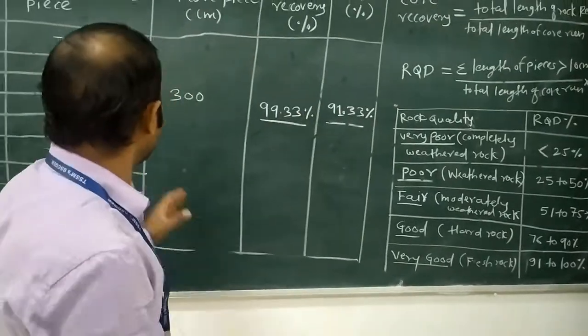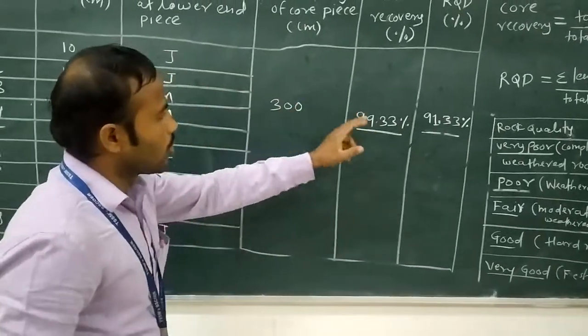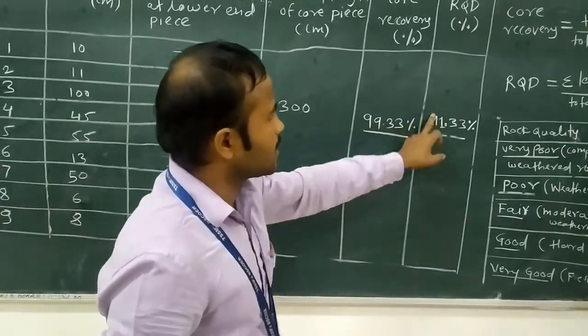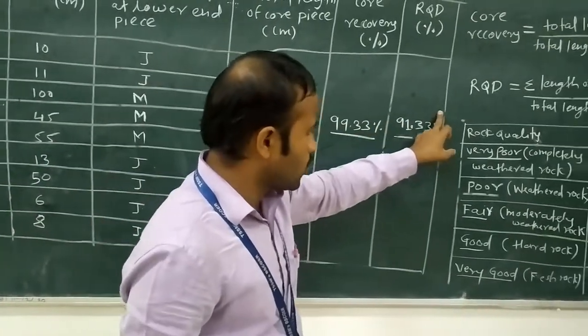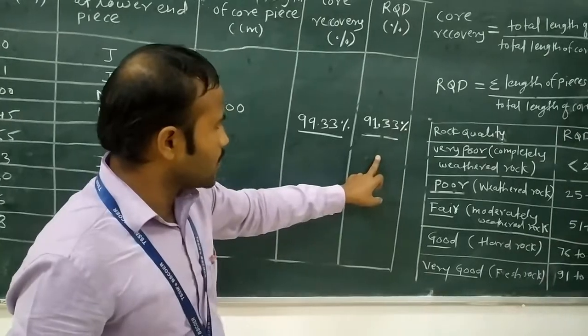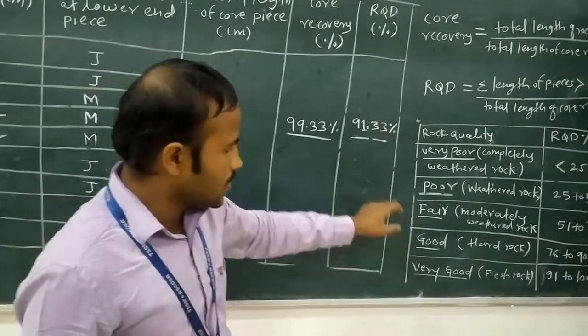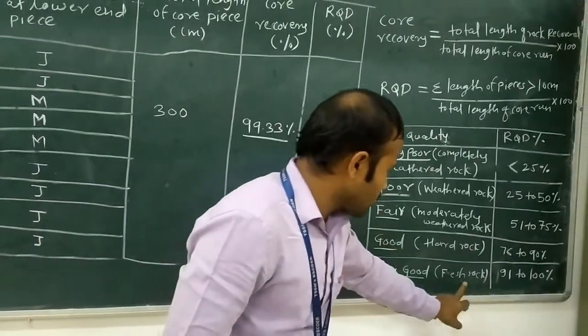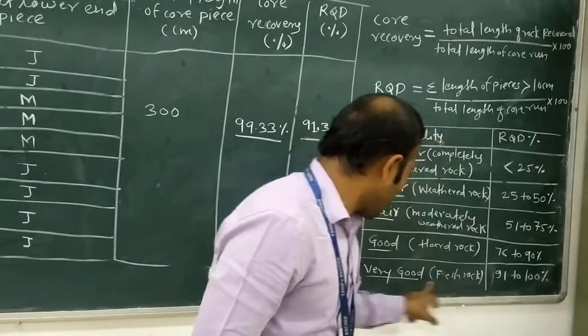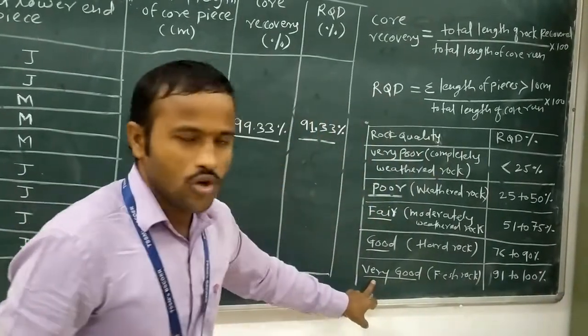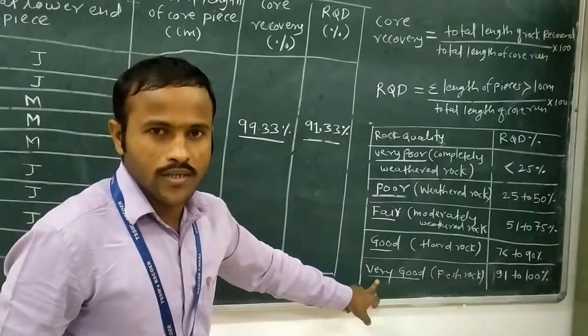With this example, we got an RQD of 91.33 percent, which means there should be presence of fresh rock below the subsurface.